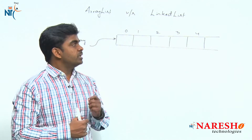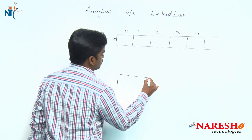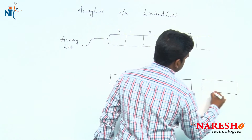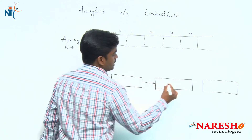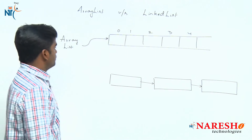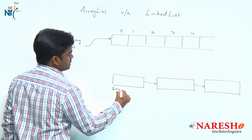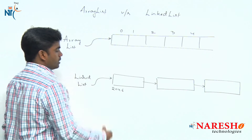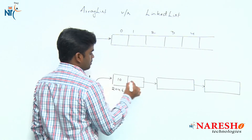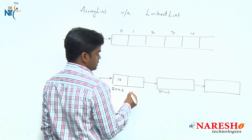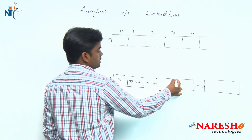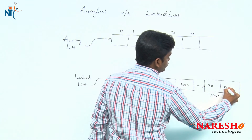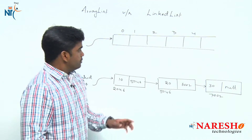In LinkedList, elements are stored in the form of nodes at random memory locations. Each node has a data part and a next address field. For example, the first node base address is 2046, which points to 5046, which holds the next data and points to the next node, and the last node has a null pointer.